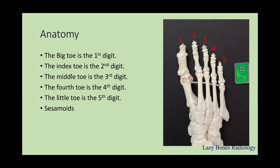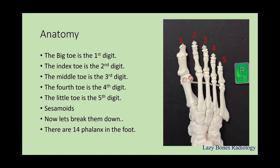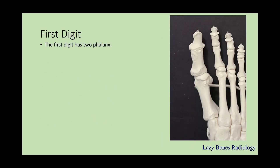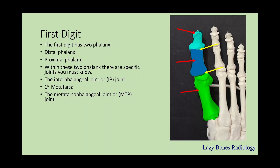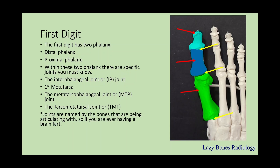There are also sesamoid bones that are underneath the first metatarsal. Now let's break them all down. There are 14 phalanges in the foot, just like there is in the hand. The first digit has two phalanges: the distal phalanx and the proximal phalanx. In between these two phalanges, there is a specific joint that you must know, which is known as the interphalangeal joint, or the IP joint. Moving proximal, there is the first metatarsal, and in between those, the joint space is known as the metatarsal phalangeal joint, or the MTP joint. Moving proximal, this is known as the tarsometatarsal joint, also known as the TMT joint. Remember, joints are named according to the bones that are being articulated. So if you're having a brain fart, just remember your anatomy.